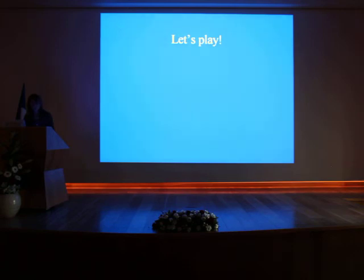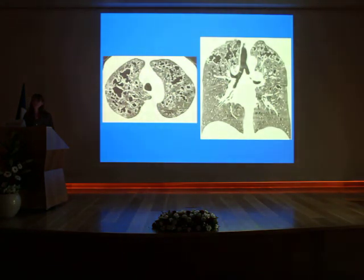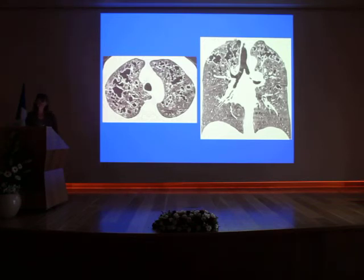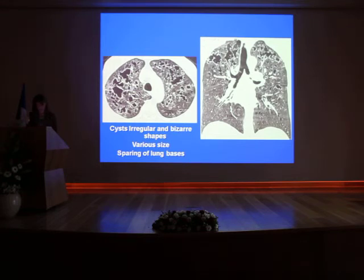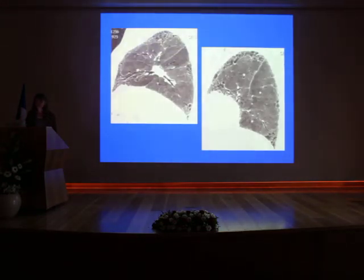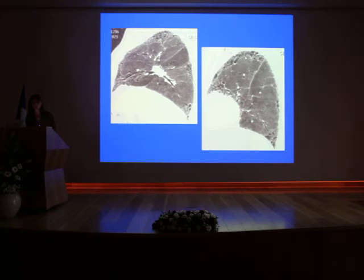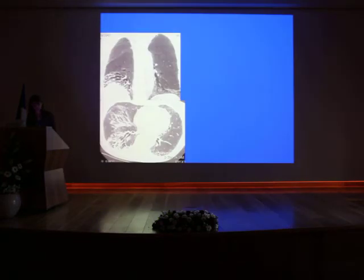Let's go through some cases. What is the main pattern? Cysts. What is the distribution? Upper lobe. What is the shape of the cysts? Bizarre. So it is Langerhans cell histiocytosis. Next case: several layers of cysts in a subpleural distribution — this is honeycombing, it is UIP.